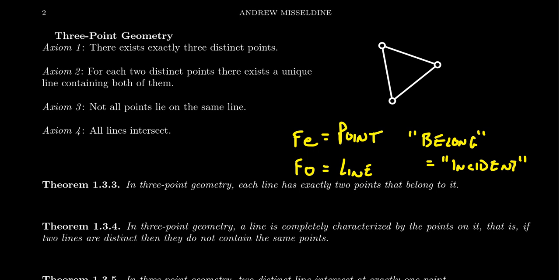Axiom three of Fee-Foe theory was: not all Fee's belong to the same Foe. In lines and points, that turns out to be: not all points lie on the same line — there's no line that contains all of the points. In other words, the entire set of points is a non-collinear set. Axiom four says that any two distinct Foe's contain at least one Fee that belongs to both. I've simplified that axiom as: all lines intersect. Because if we introduce the word intersect, that axiom can be simplified using the definition to just be: all lines intersect.